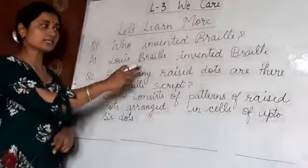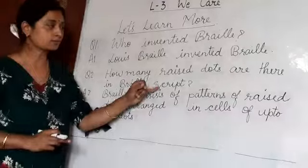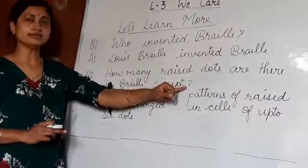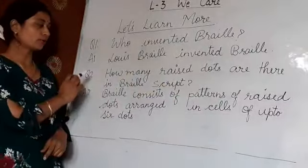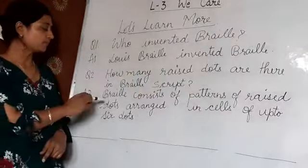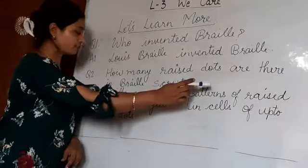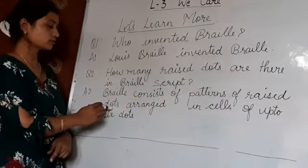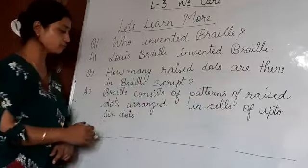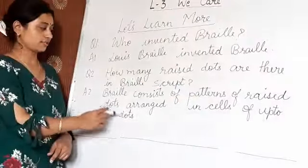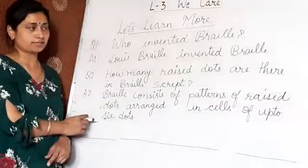Moving to question number 2: How many raised dots are there in Braille script? The answer is: Braille consists of patterns of raised dots arranged in cells of up to 6 dots. So we have completed question number 2.